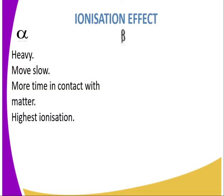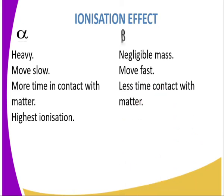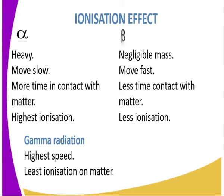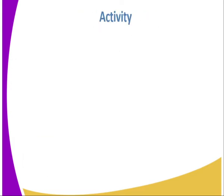Beta particles have negligible mass, so they move faster through matter. This means they have less contact time with matter and therefore have a lower ionization effect. Gamma radiation has no mass and travels at the highest speed through matter, giving it the least ionization effect on matter since its contact time is minimal.